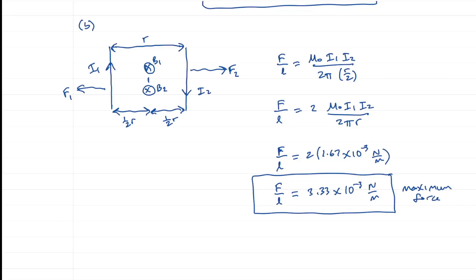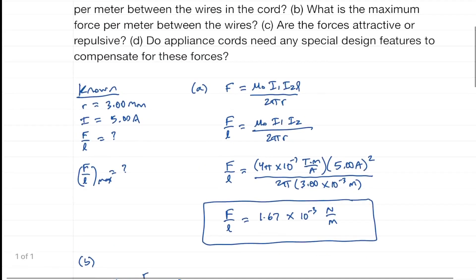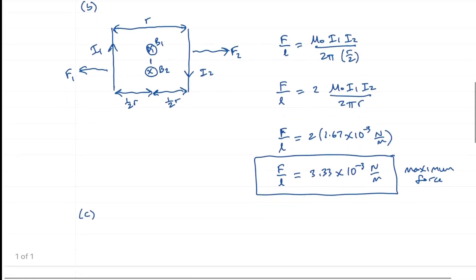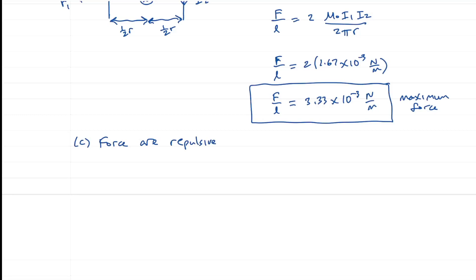For part c, we found the forces are repulsive. The forces are repulsive because the currents are anti-parallel, meaning they flow in opposite directions. Anti-parallel currents produce repulsive forces.